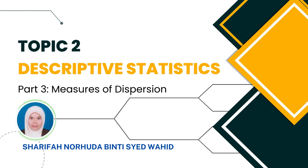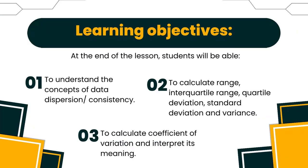Assalamualaikum, hi guys. Today we continue Topic 2, focusing on measures of dispersion. By the end of this subtopic, you will be able to understand the concepts of data dispersion, calculate range, inter-quartile range, quartile deviation, standard deviation, and variance, and also calculate the coefficient of variation and interpret its meaning.